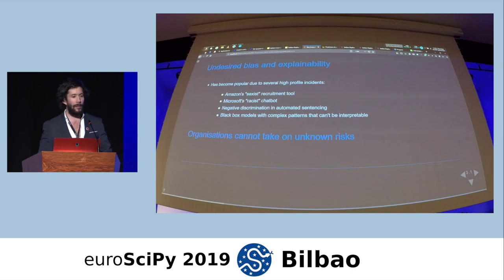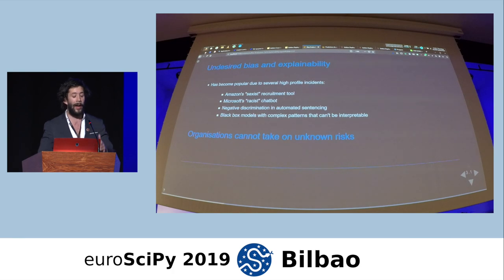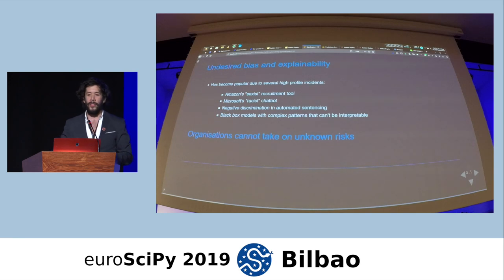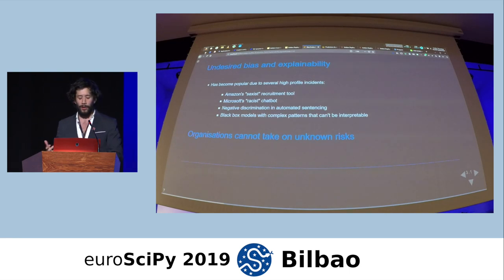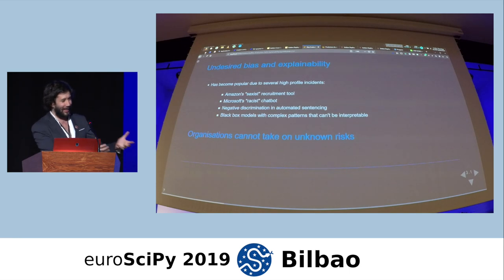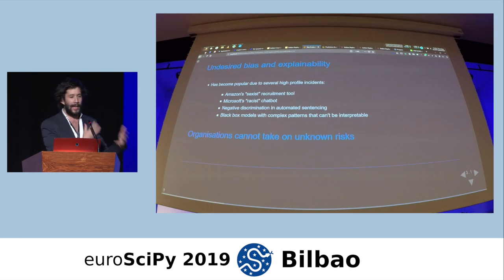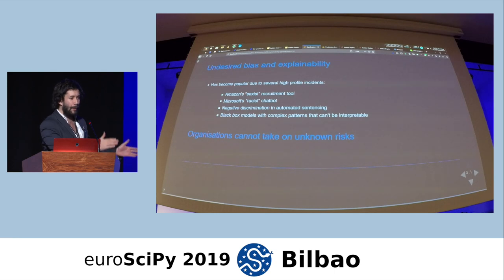This is not far from many high-profile use cases. Explainability and algorithmic bias has become such a discussed topic because of incidents like Amazon's sexist recruitment tool, which rejected applicants with gaps in employment, discriminating against women who had taken maternity leave. Or Microsoft's racist chatbot, which did online learning from Twitter — unsurprisingly turning evil. More seriously, there's negative discrimination in automated sentencing, and black box models deployed without understanding why they perform a certain way in cases where the requirements demand that understanding.